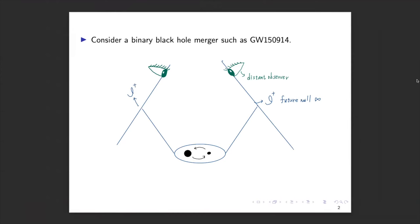This event is called GW150914 — gravitational wave 2015. It happened on September 14, 2015, and it corresponds to a binary black hole merger.